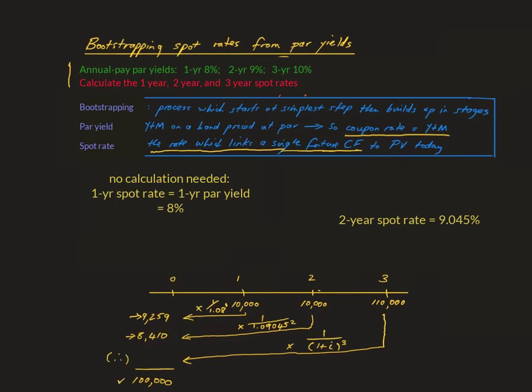Applying the same insight as before — namely that the bond's value at T0 has to be 100,000 Rand — you establish that the missing value, which is the present value of the T3 cash flow, has to be 82,331 Rand. Finally, you calculate the three-year annual spot rate at 10.14%.